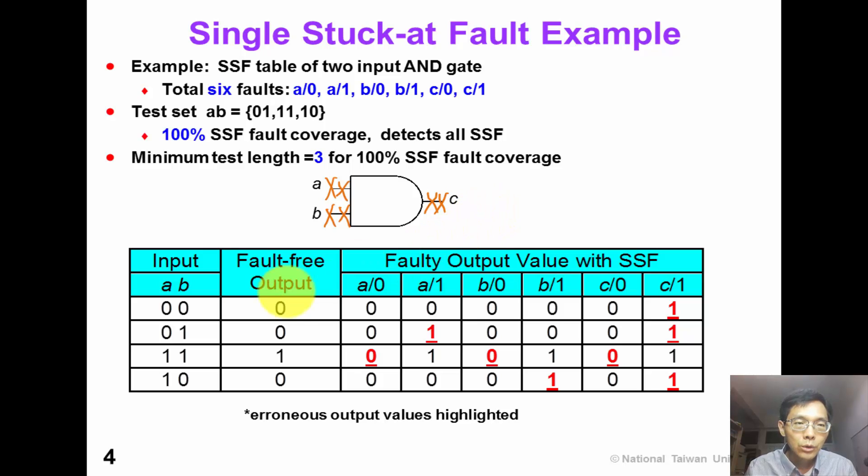This table shows all 4 input combinations. The fault-free outputs are shown in this column. And in the 6 columns, we show all the faulty outputs, with the erroneous output highlights in red.